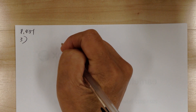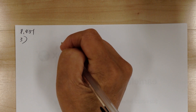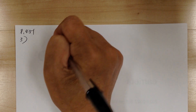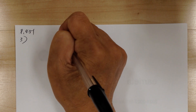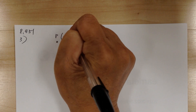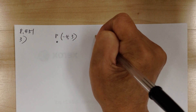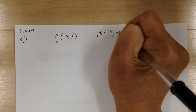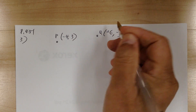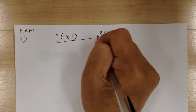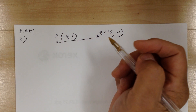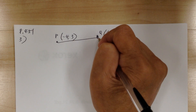Number 3. Here you've got point P at negative 4, 3, and point Q at negative 6, 1. It says Q is a midpoint — find M. So Q is the midpoint, and you're looking for M.